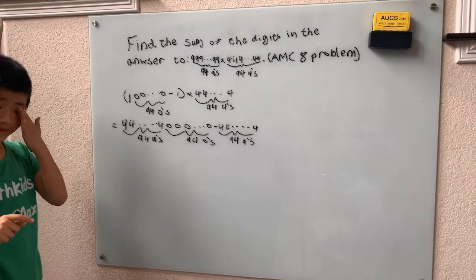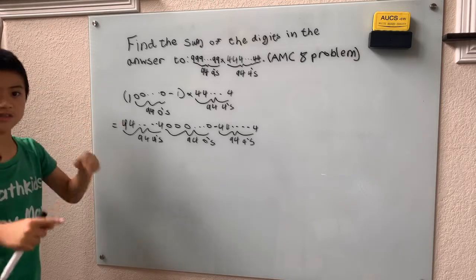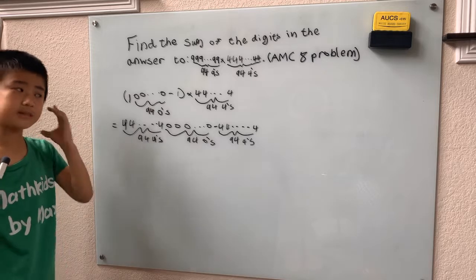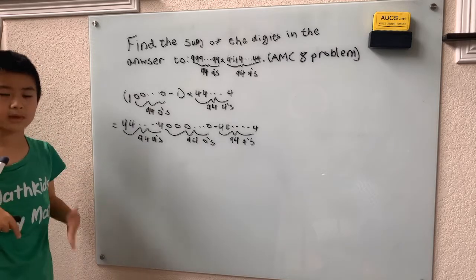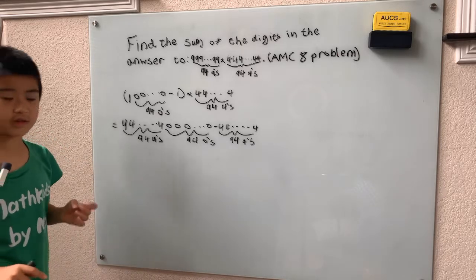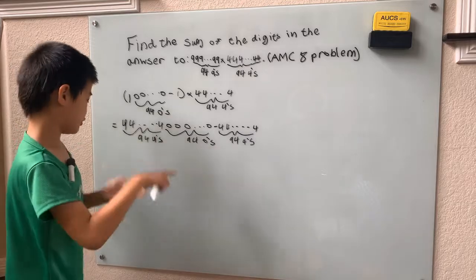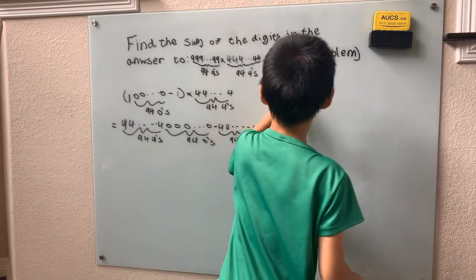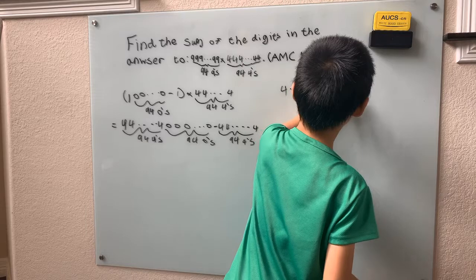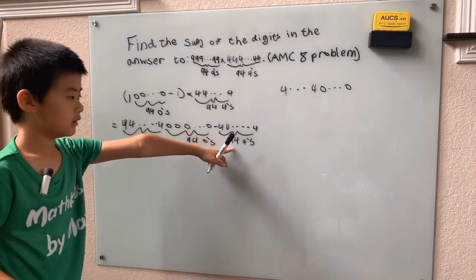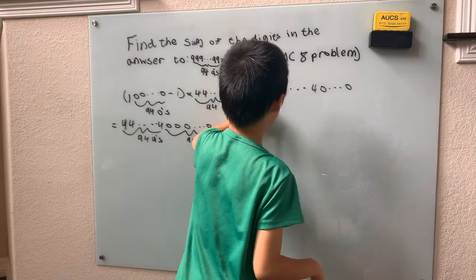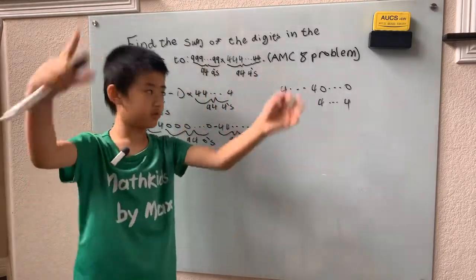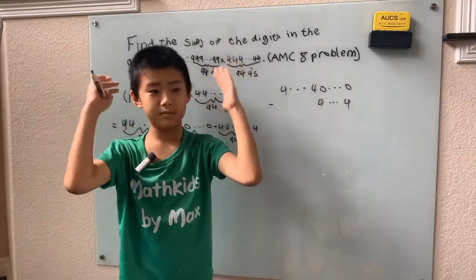So we're going to use stacking subtraction, but since we have repeating digits we don't need to write them all down — we'll definitely end up with repeating digits in the result. We line up the 4s with the 0s because we have 94 fours and 94 zeros starting from the same point, so they line up nice and neat. We start from the right and work left: 0 minus 4, we can't do that, so we need to borrow.